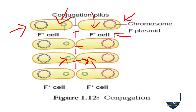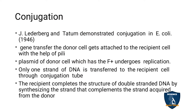You can see the DNA material entering into the F minus bacterium. After entering, the plasmid starts replicating and forms a circular structure called the plasmid in that cell. Now this F minus bacterium becomes an F plus bacterium. The conjugation tube is then destroyed, and both bacterial cells are now F plus.